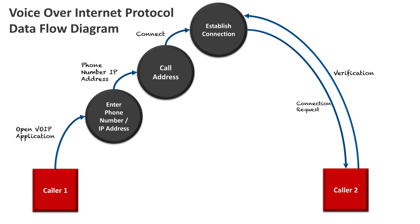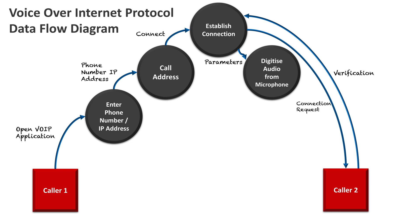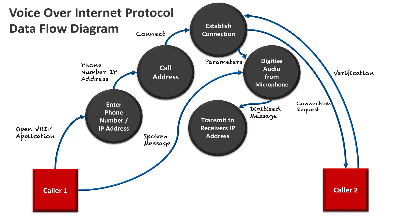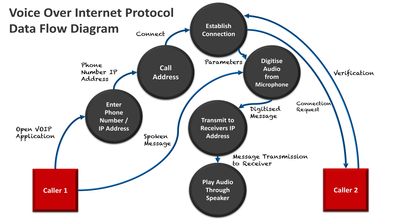Once the connection is established, they can start talking. Voice is an analog format, so the software digitizes the audio as the callers speak. Caller 1 speaks into their microphone, the app digitizes their audio in order for it to be sent over the internet using the VoIP protocol. The digitized message is then transmitted to the receiver's IP address, and the receiver gets the message played through their speaker — so Caller 1's message is now heard by Caller 2.